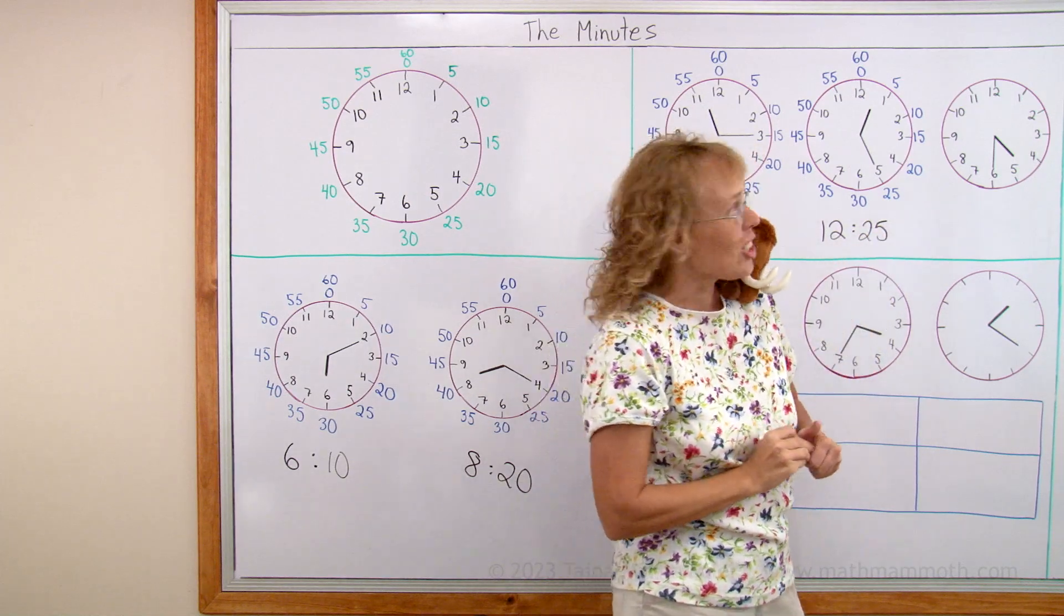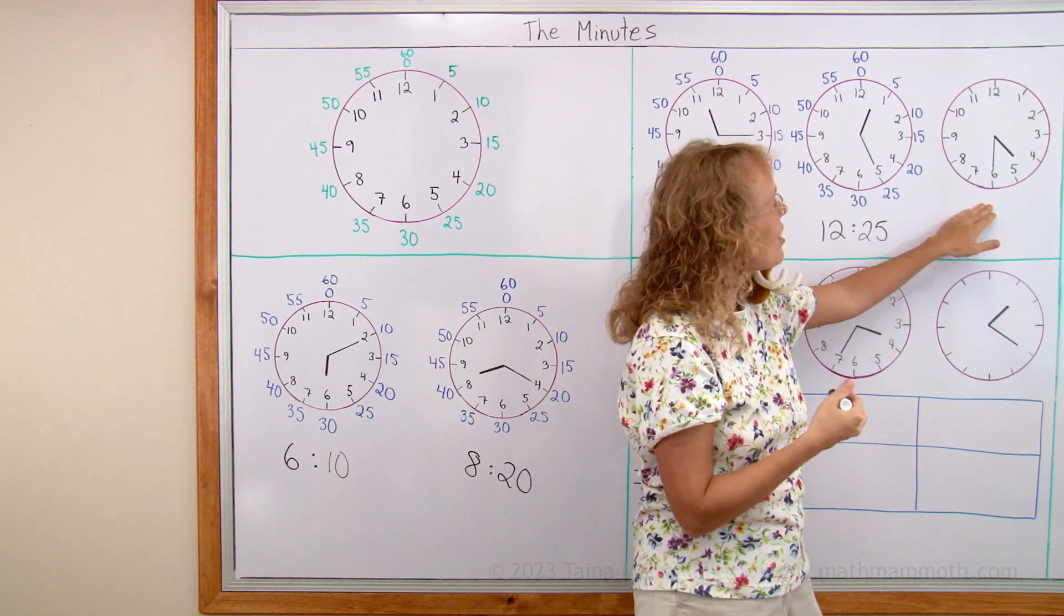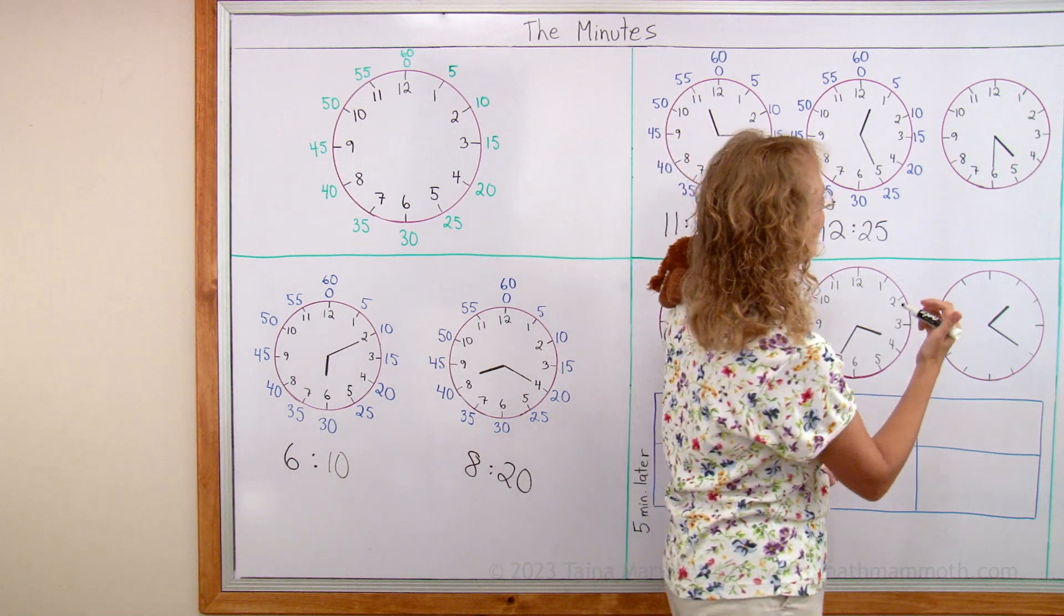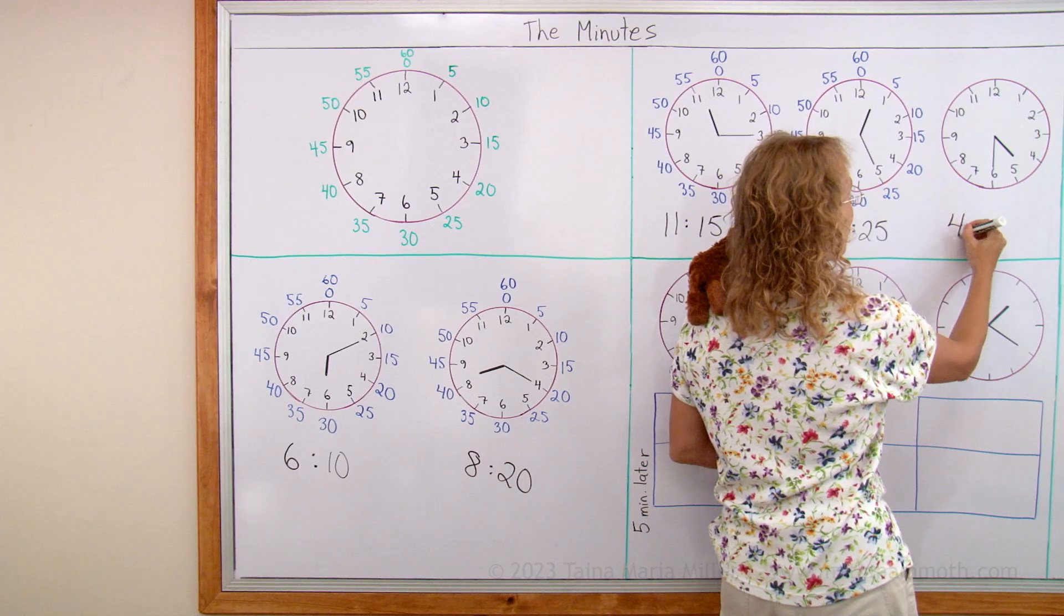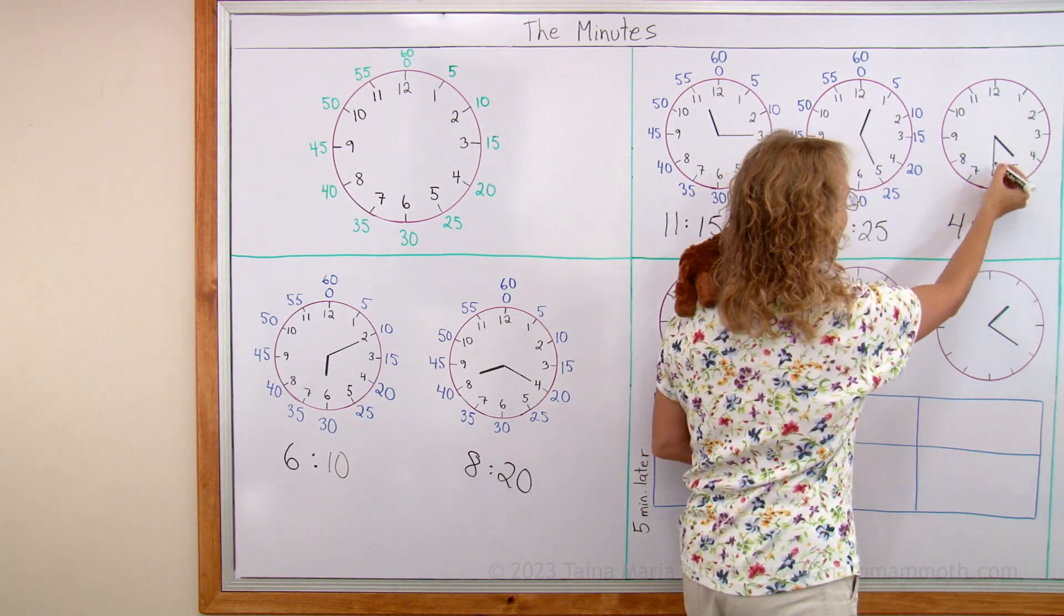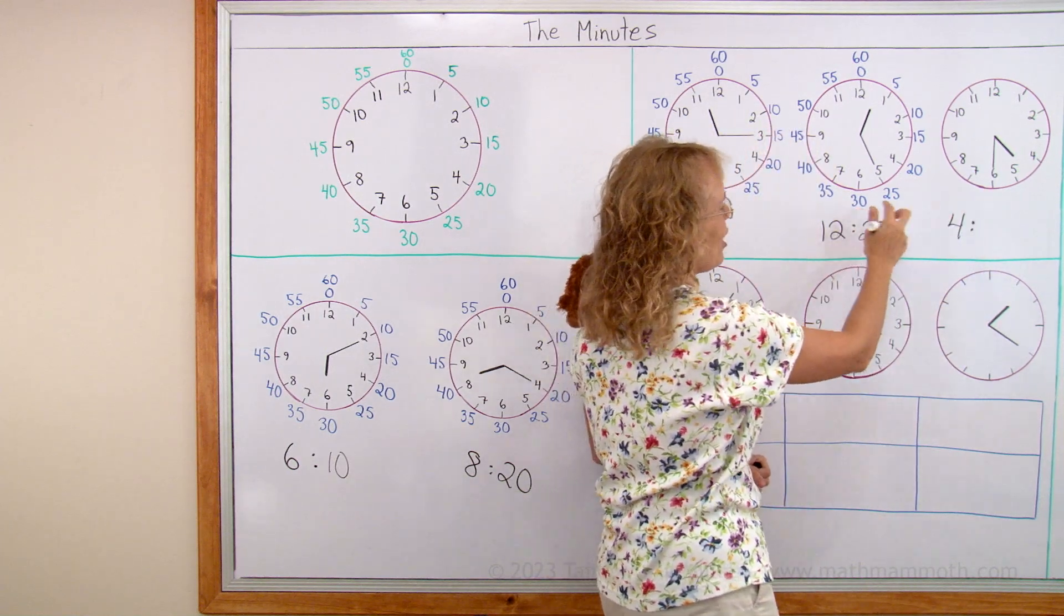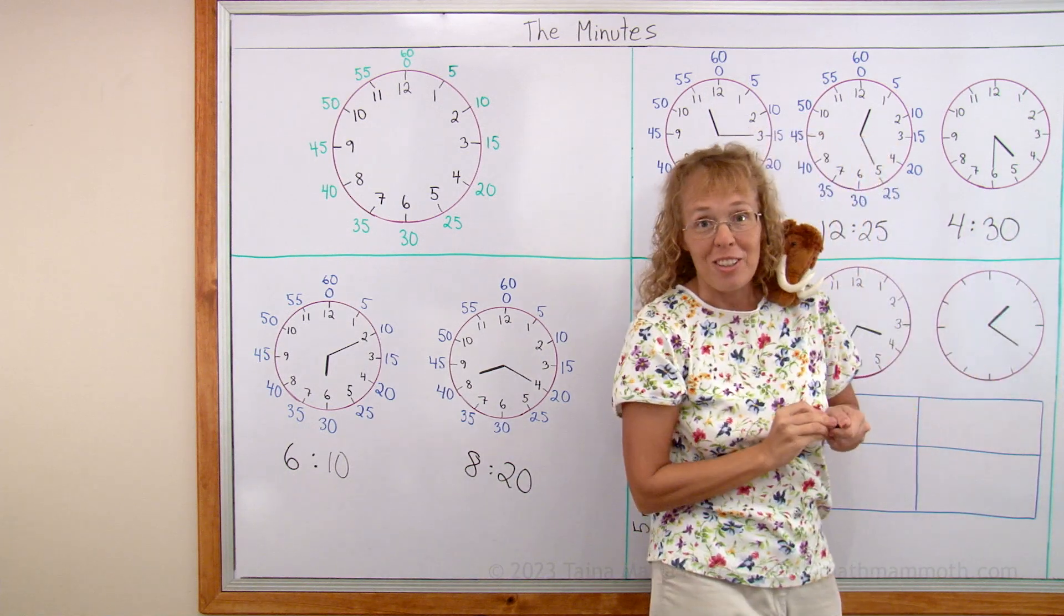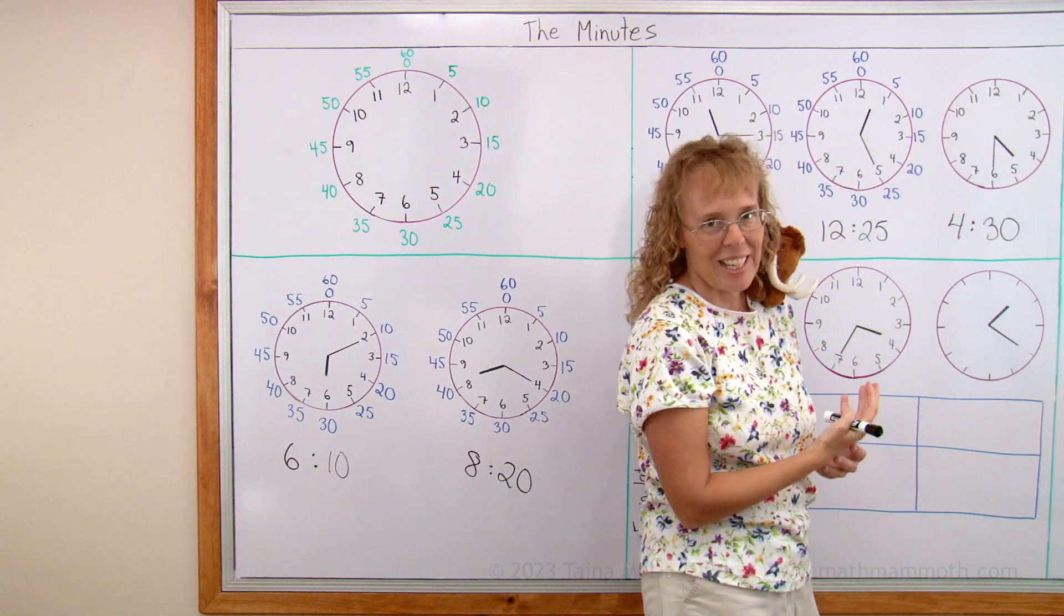And now comes the challenge. A clock that does not have all those numbers for the minute hand written out. So can you tell what time it is? The hour hand over here. It is past 4 o'clock so we need to write 4 hours. It's not yet 5. And the minute hand points straight down. So what number would be here? Right now you can just check over here that it would be 30 minutes. But you do need to learn by heart what numbers go here on the outer rim. So to speak. For the minute hand.